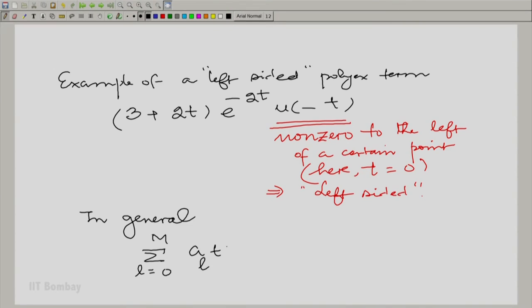In general, we could have the following form. A right sided signal is one which is non-zero after a certain point on the t axis. The other way of saying it is, you can find the point t equal to t_0, or that could just be t equal to 0 because you are free to fix the 0 where you like. However, you cannot do it if there are multiple poly ex terms because they may not have the same point from which they start.